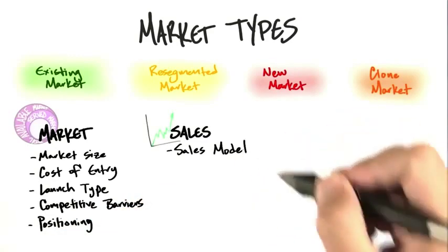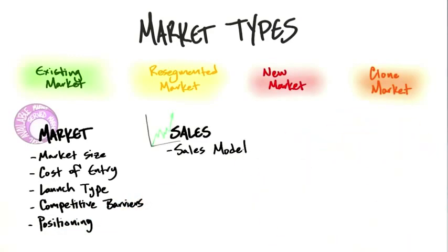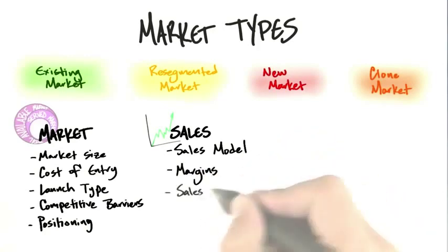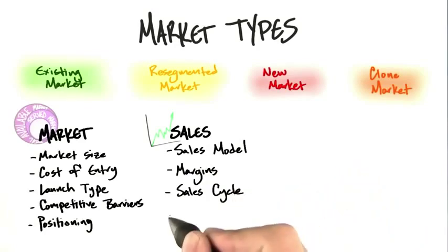It affects your sales model. Are you going to hire direct sales? When do you hire them? What kind of margins you should have? Or the profit? How long it takes? That is the sales cycle. And something called the chasm width, which we'll take a look at in a second.